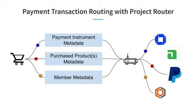Project Router, at its heart, is a rules engine. It takes a set of inputs and generates a payment transaction route. These inputs can largely be categorized into three categories. First is information about the payment instrument — for example, what kind of card scheme that payment instrument is. Next, we have information about the product being purchased: maybe it's a subscription product, maybe it's a one-time purchase, maybe it's the first time a subscription is purchased. Finally, we have the member metadata, which contains things like the user's country as well as their experimentation profile, which tells us which experiments the member is eligible for during payment transaction routing experimentation.